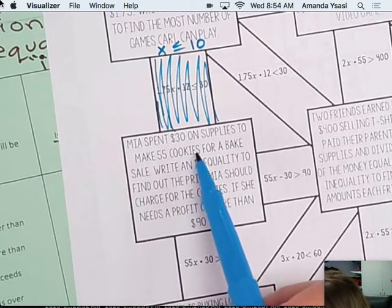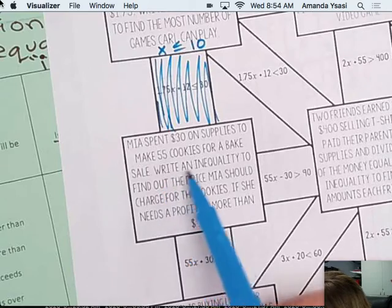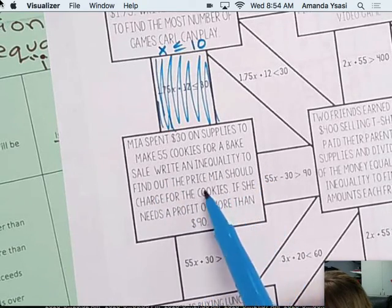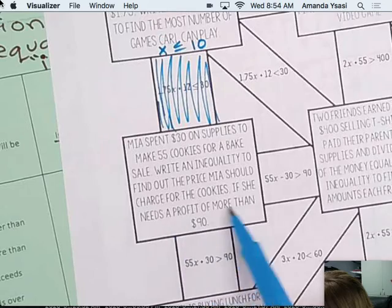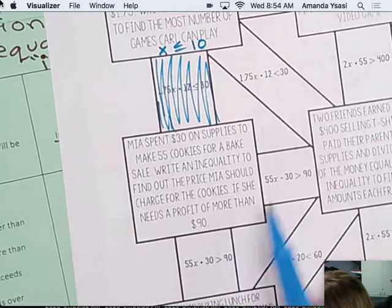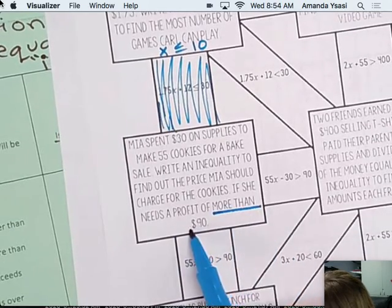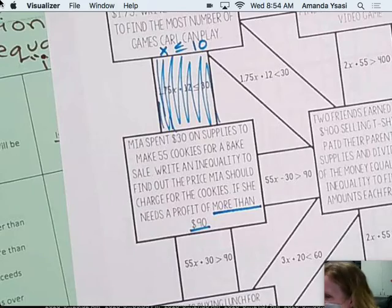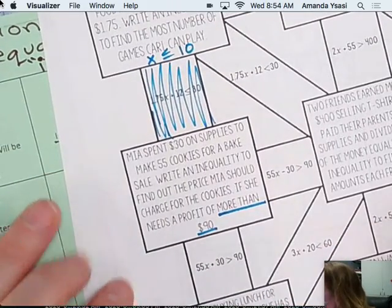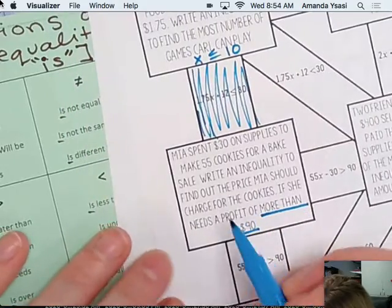Mia spent $30 on supplies to make 55 cookies for a bake sale. Write an inequality to find the price Mia should charge for the cookies if she needs a profit of more than $90. So if it's going to be more than $90, what inequality do I use? Greater than.